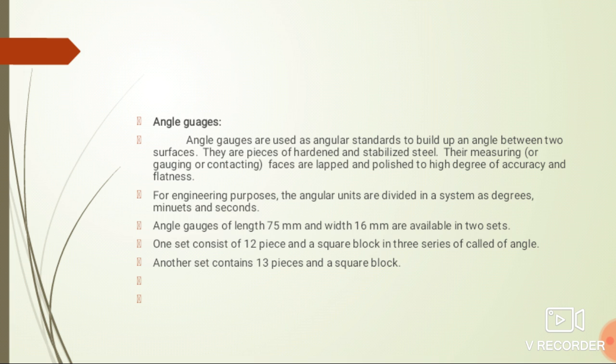Angle gauges are used as angular standards to build up an angle between two surfaces. They are pieces of hardened and stabilized steel. Their measuring faces are lapped and polished to high degree of accuracy and flatness.